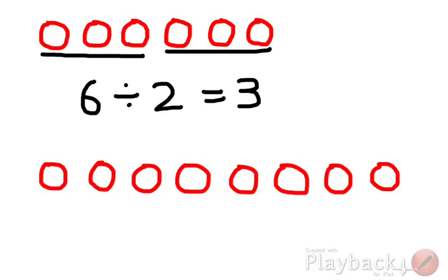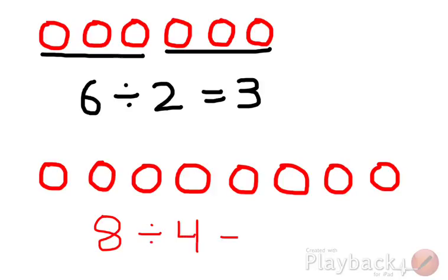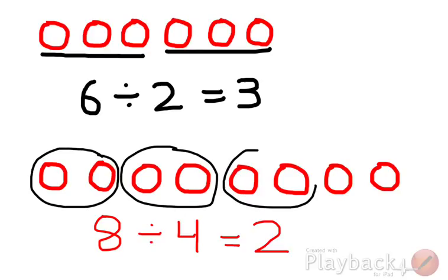Now suppose we have 8 objects: 1, 2, 3, 4, 5, 6, 7, 8. And we want to divide them among 4 people. How do we write it? 8 divided by 4 is equals to how much? We have to give 2 to each group. So we say 8 divided by 4 is equals to 2.